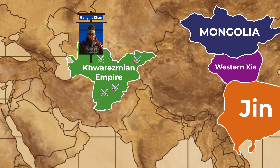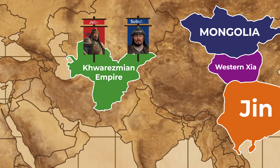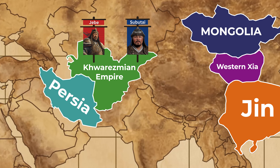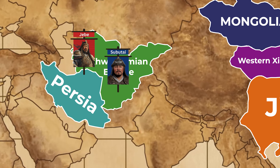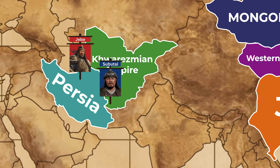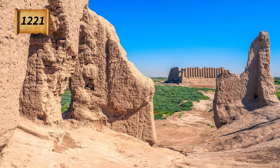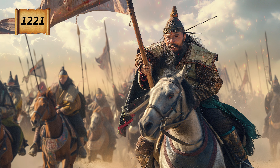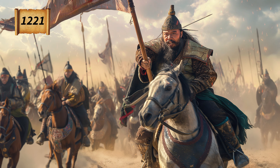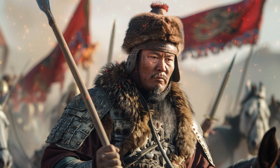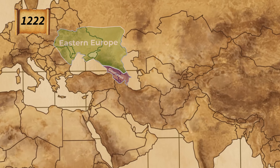Following the defeat of the Khwarezmian Empire, Genghis Khan's generals — particularly Subutai and Jebe — continued to push westward into Persia. They employed lightning-fast cavalry movements, psychological tactics, and ruthless efficiency to subdue Persian cities. The fall of Merv and Nishapur in 1221 marked significant milestones in this campaign, often referred to as the Great Raid, which laid the groundwork for future Mongol invasions into Europe.